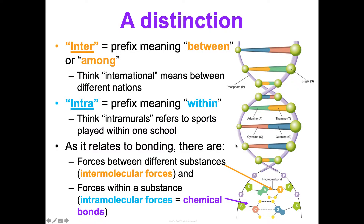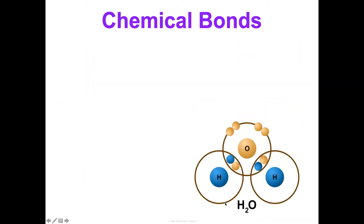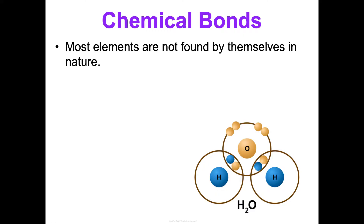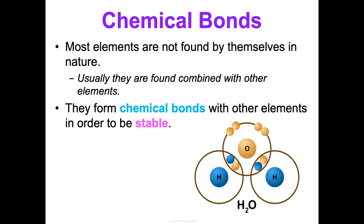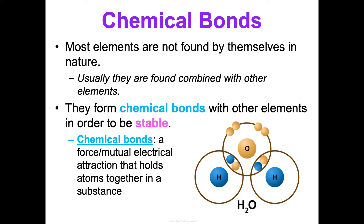In this concept, we're going to zoom in on intramolecular forces, or chemical bonds. Most elements are not found by themselves in nature — usually they are found combined with other elements, and they do that by forming chemical bonds in order to be stable. A chemical bond is a force or mutual electrical attraction that holds atoms together in a substance — I like to think of them as the glue that holds atoms together. When atoms form chemical bonds, their valence electrons get redistributed in a way that makes all the atoms in the compound stable, and how this redistribution happens reflects the type of bond that has formed.